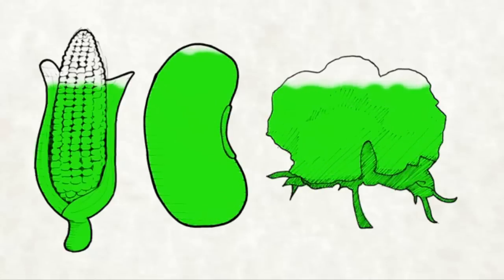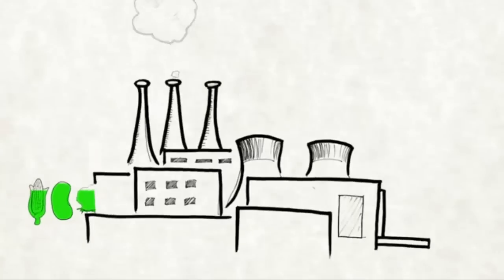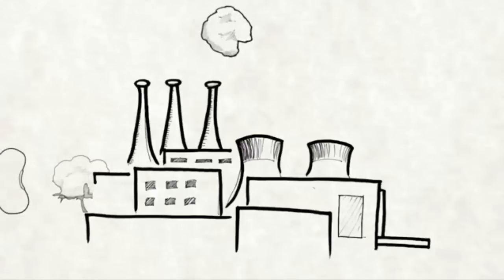These raw foods are then widely used in food production processes. Nearly three of every four processed foods contains at least one GMO ingredient. It's almost impossible to avoid products containing GMOs.